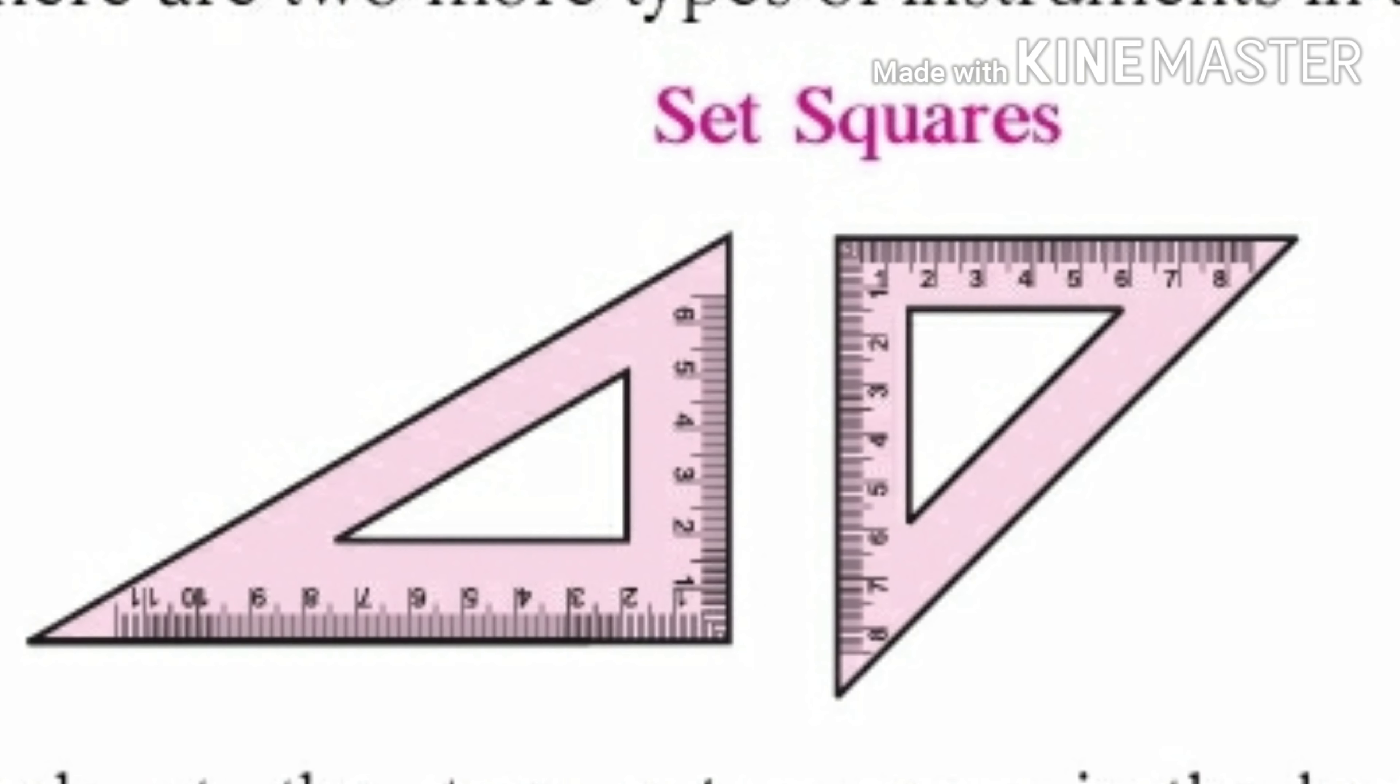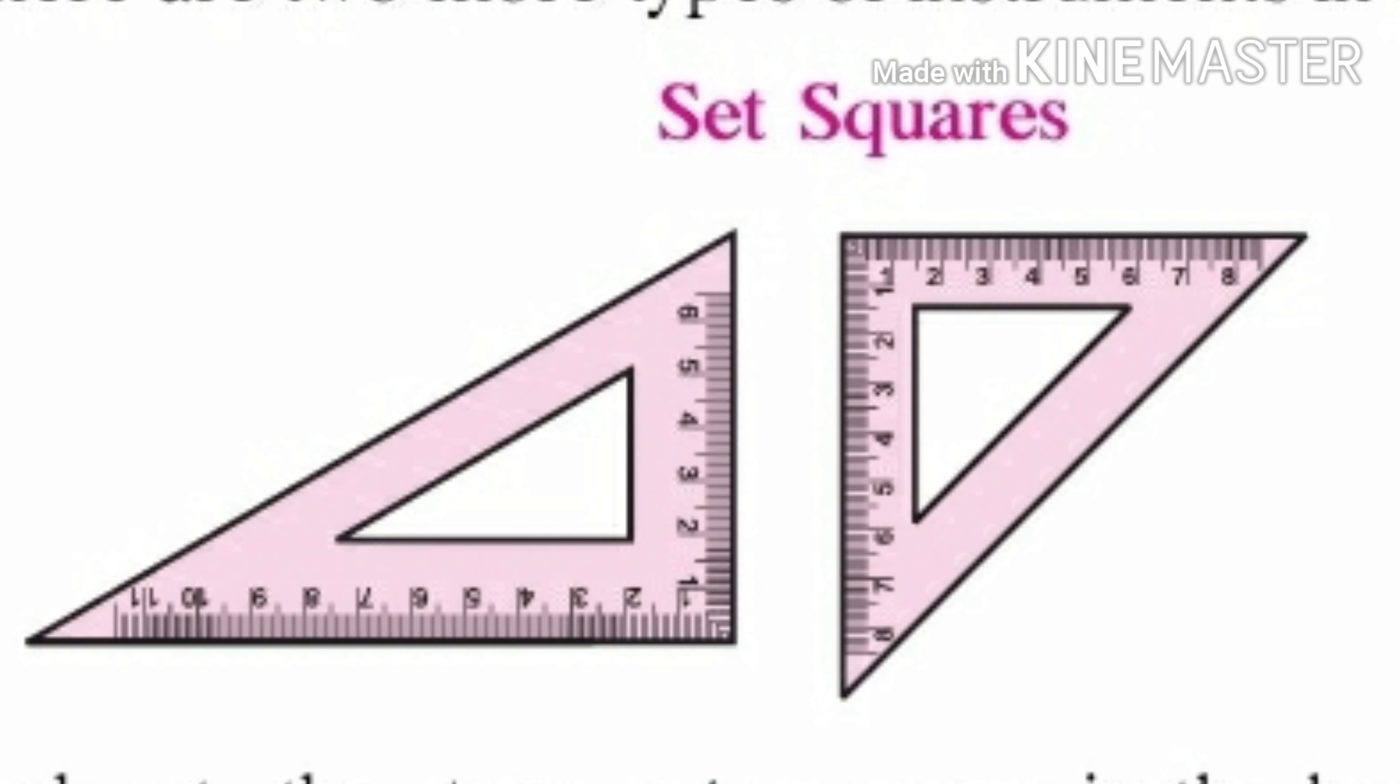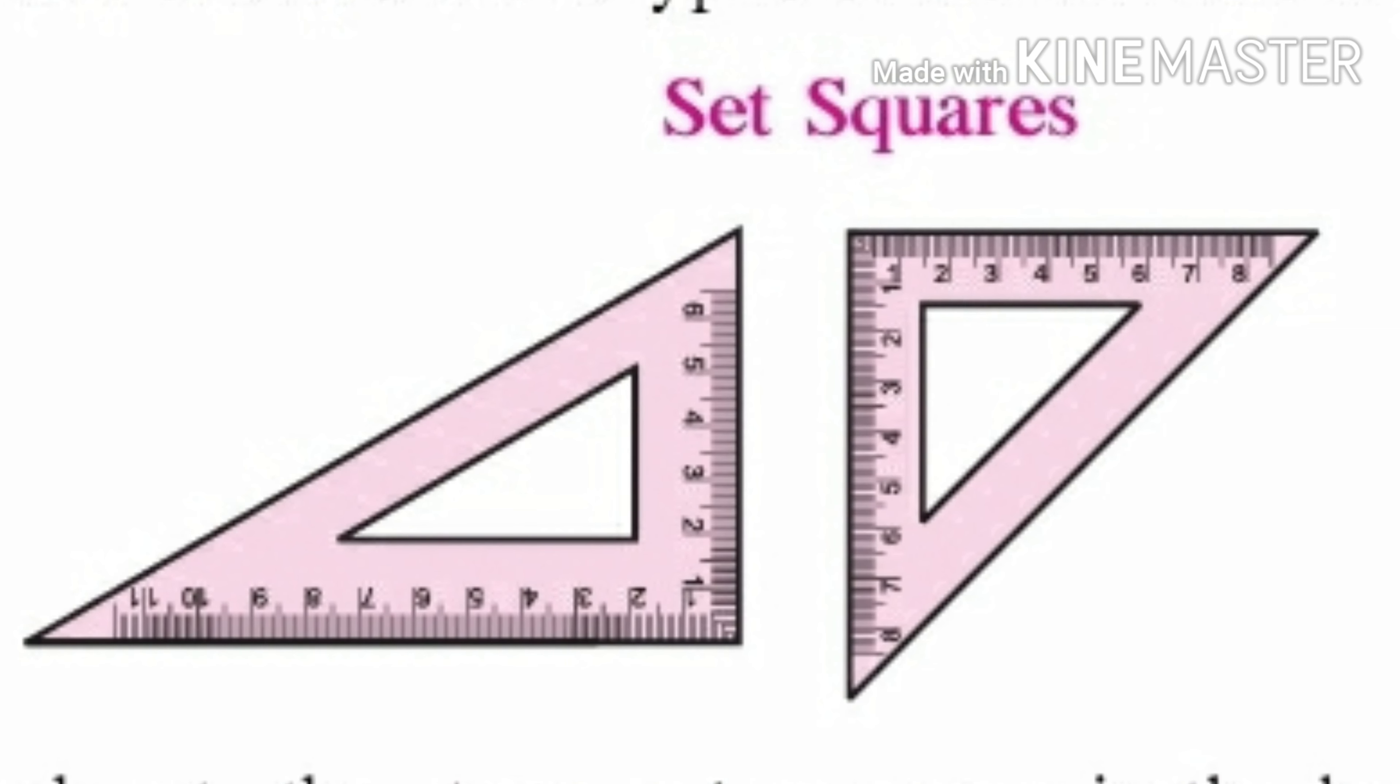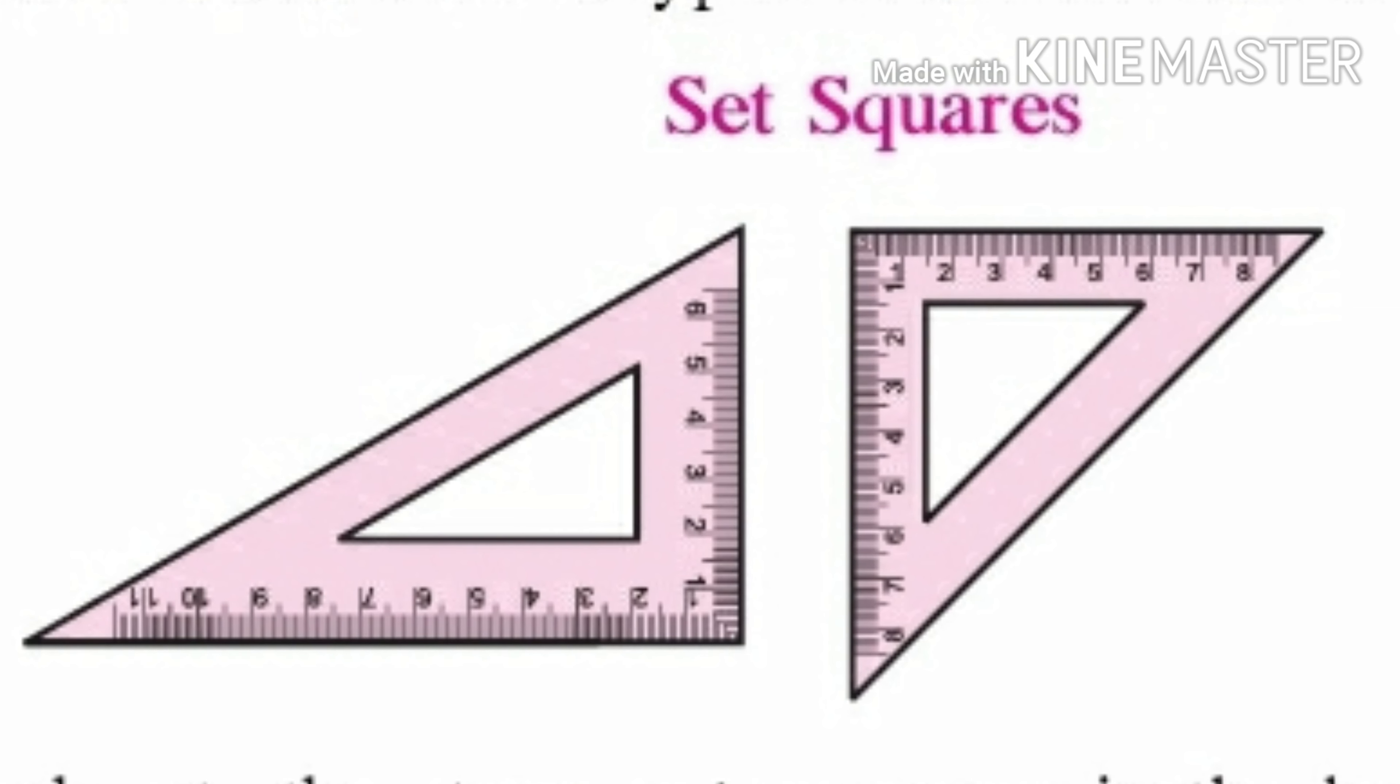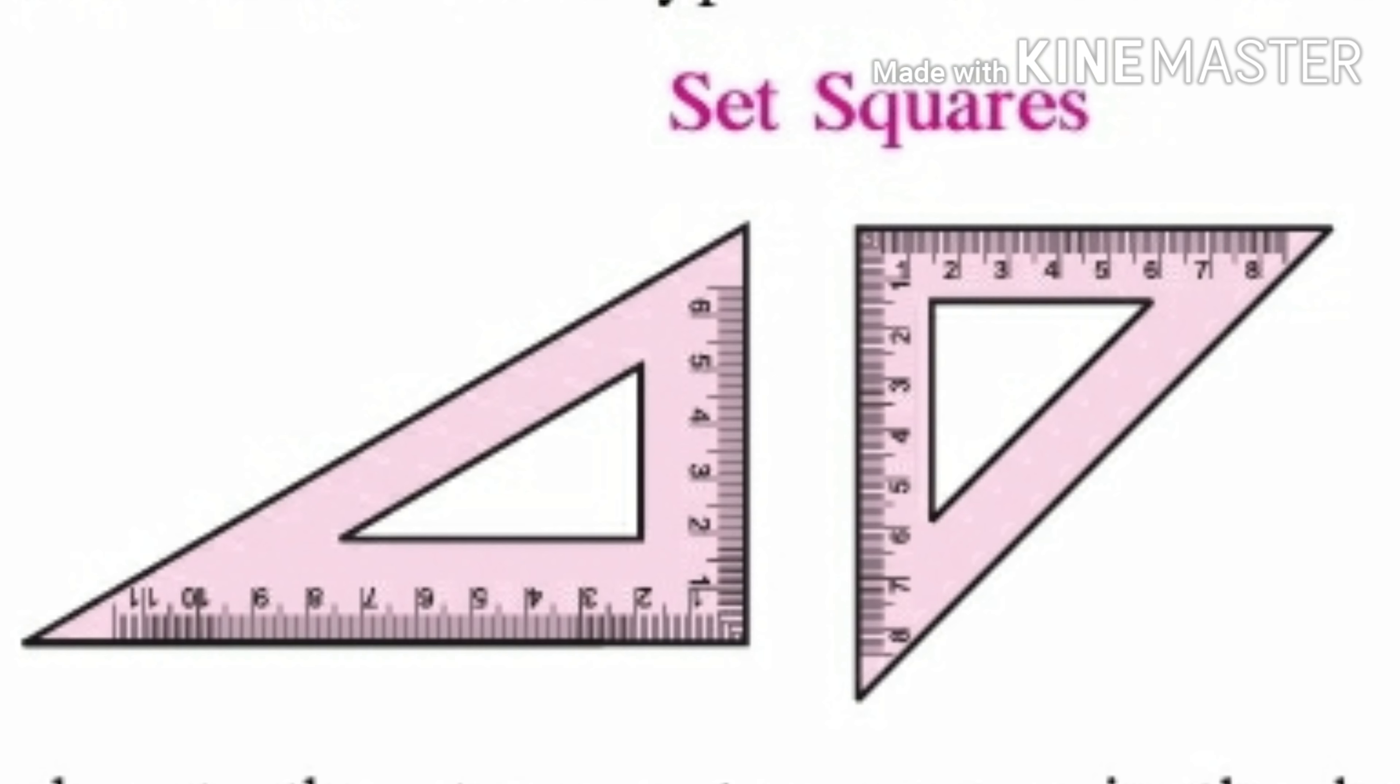Set squares are two triangular pieces. Observe their angles. One of them has 45 degree, 45 degree, and 90 degree angles at the vertices.